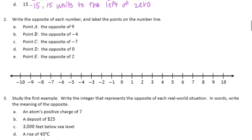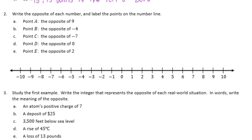Number 2: write the opposite of each number and label the points on the number line. Point A: the opposite of 9 is negative 9, so we plot negative 9 — that is point A. Point B: the opposite of negative 4 is 4.